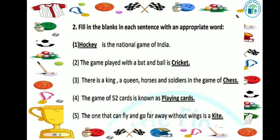Next question: the one that can fly and go far away without wings is a dash. Which thing has no wings but still flies? Yes, a kite has no wings but still flies. So our answer is kite.